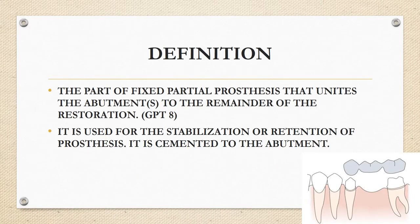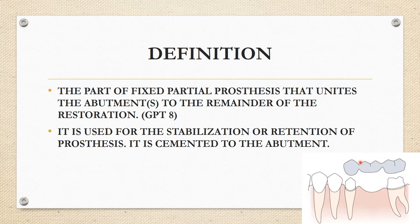The definition of a retainer: it is a part of the fixed partial prosthesis that unites the abutments to the remainder of the restoration. This definition is given by the Glossary of Prosthodontic Terms 8. In this diagram, these are your abutments and this is the retainer — the retainer is the component of fixed partial dentures that sits on the abutment.